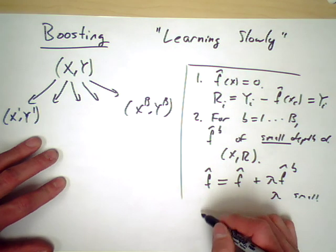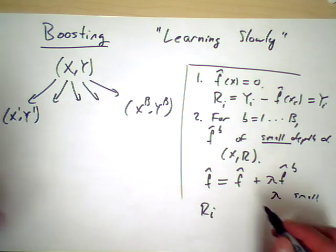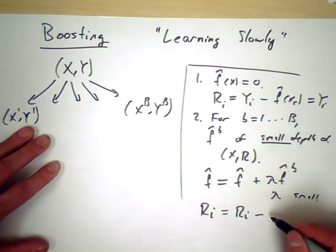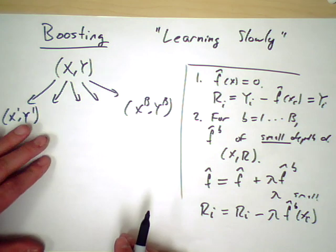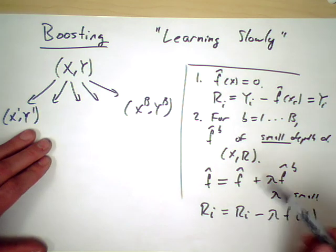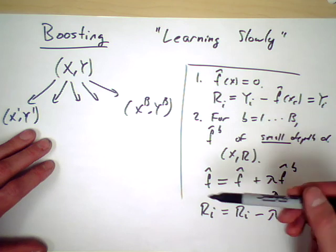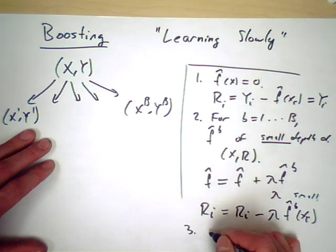You update the residuals of course, so the new residual is the old residual minus the updated prediction. That's easy to update once you have this model. And you loop through all the models and do this layer by layer by layer. And then finally you output the full model f.